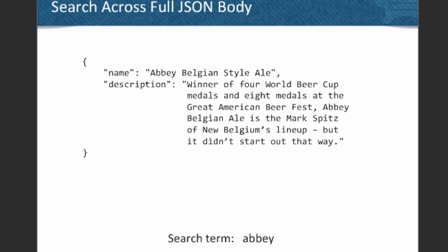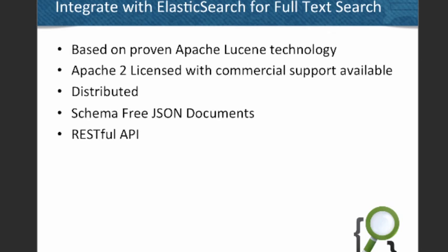But sometimes it's still not all that you want. Sometimes you really do need full-text search. When we talk about full-text search, at the simplest level we're talking about a document database — we're sticking JSON documents in there. What we really want to be able to do is search for a term like 'Abby' and have that match something, maybe in the name or maybe in the description. To give users that capability, we've integrated with a product called Elasticsearch.